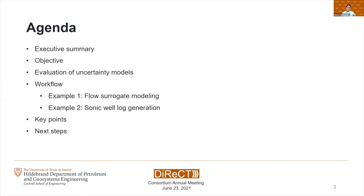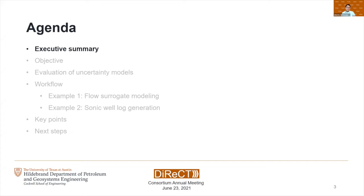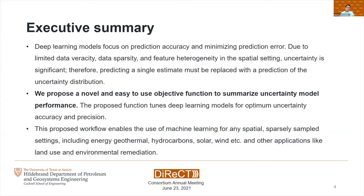followed by the key points and the next steps. First, the executive summary. Deep learning model focuses on prediction accuracy and minimizing prediction error, but when uncertainty is significant due to limited data veracity, data sparsity, and feature heterogeneity, we must expand model validation to consider the entire uncertainty model to ensure that the uncertainty distributions are precise and accurate.